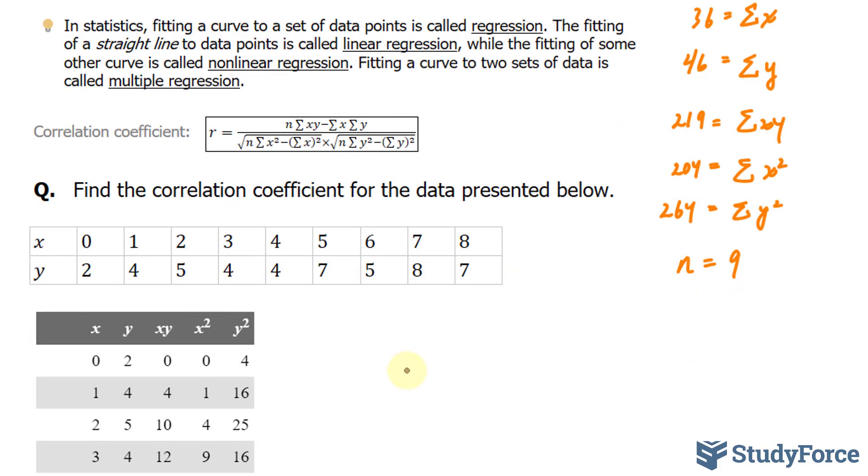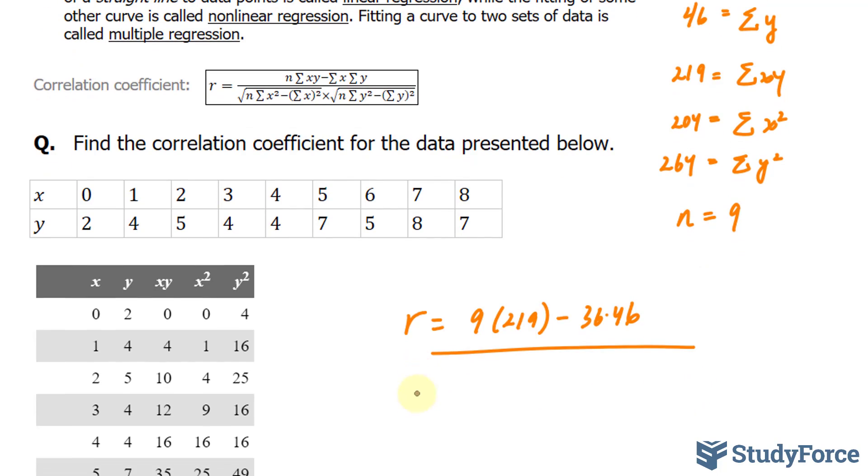Therefore, r is equal to 9 times the sum of xy, which is 219, minus the sum of x, 36, times 46, divided by the square root.